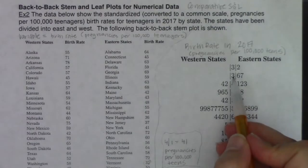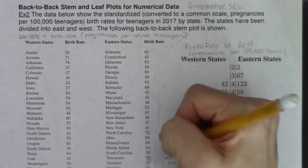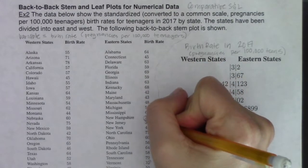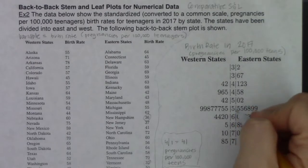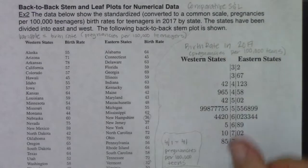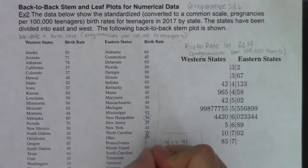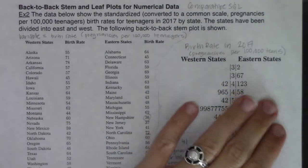If I look for 3-6, that would be the number 36 — some state has a pregnancy rate of 36, looks like New Hampshire. Going through the leaves, the highest one on the east side has a stem of 7 and a leaf of 2, making 72. Which state was that? It looks like North Carolina for the eastern half of the country.